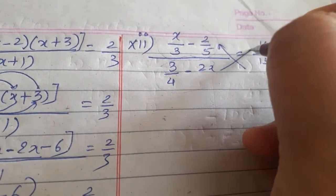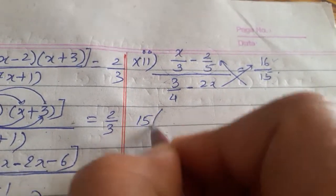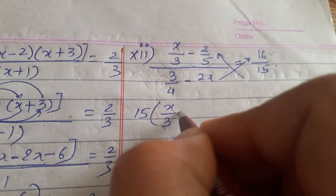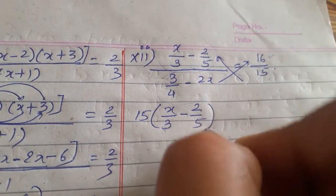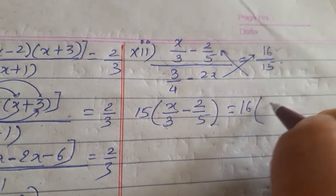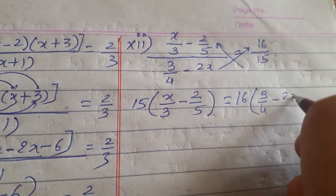So, there will be cross multiplication. 15 multiplied by x upon 3 minus 2 by 5 is equal to 16 multiplied by 3 by 4 minus 2x.